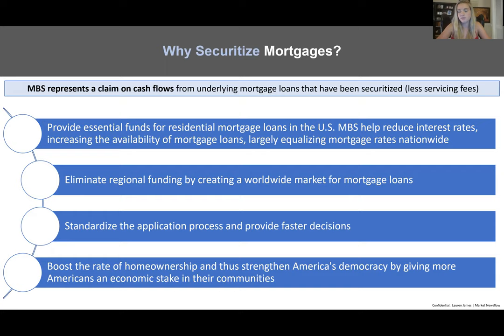Things are now more standardized because with Fannie and Freddie buying these loans, they're going to all need to be relatively similar — similar LTV profiles with LTVs below 80, similar DTIs around 36% or less, and prime borrowers need at least a 660 FICO score. With that in mind, we're further boosting the rate of home ownership and thus strengthening America's democracy.